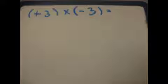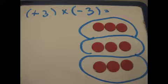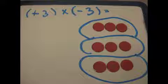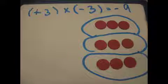This is how you multiply a positive and a negative. This equation means you're adding 3 groups of negative 3. You can clearly see that this equals negative 9.